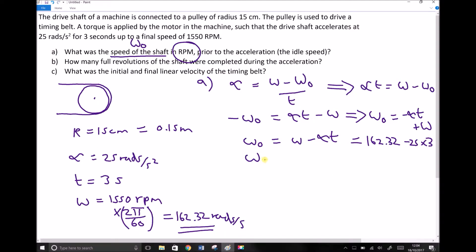Therefore, the original velocity, omega zero, is 162.32 minus 25 times 3, or minus 75. And that gives me 87.32 rads per second.